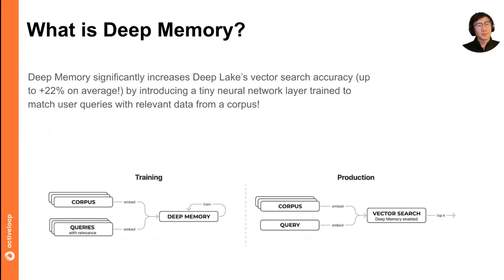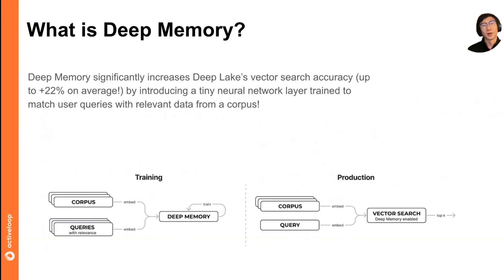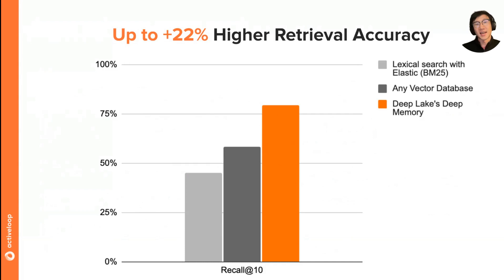Looking at the diagram, during training you feed it input context and query data, essentially training this neural net module on top of your own data domain. So instead of using a pre-trained off-the-shelf Hugging Face embedding model, this module actually trains based on question and context pairs that you feed it. Then when you're ready to deploy in production, you activate Deep Memory in inference mode, and given production user queries, use this embedding setup along with Deep Memory to get a more optimized embedding representation that gives better retrieval results versus a pre-trained embedding model.